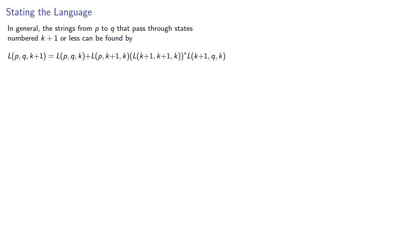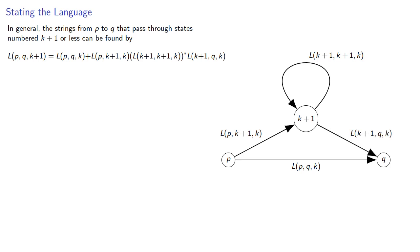And again we can think about this as going from p to q passing through states numbered k or less, or there's our union from p to k plus 1 through states labeled k or less, looping from k plus 1 to itself any number of times, and then going from k plus 1 onto q.